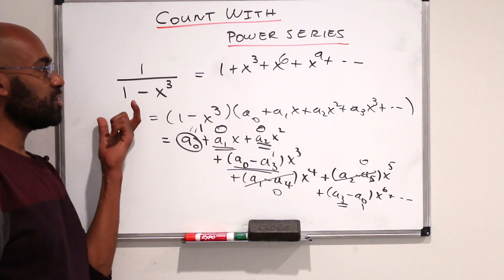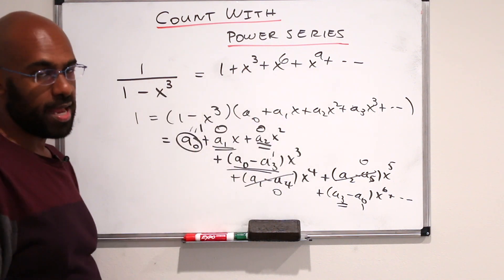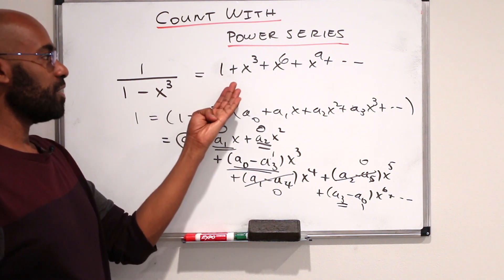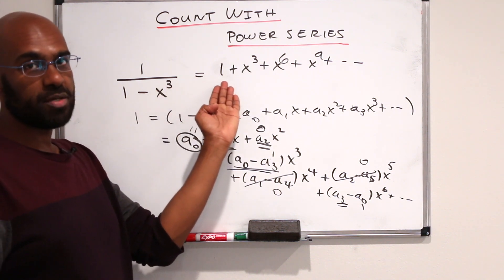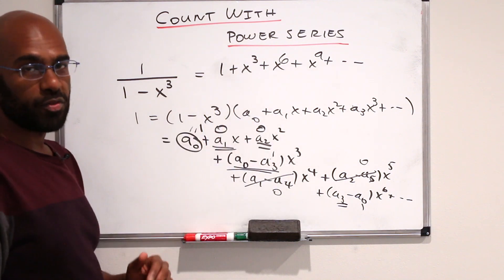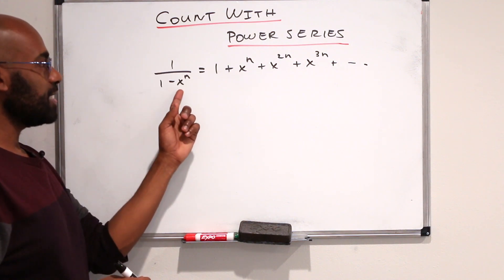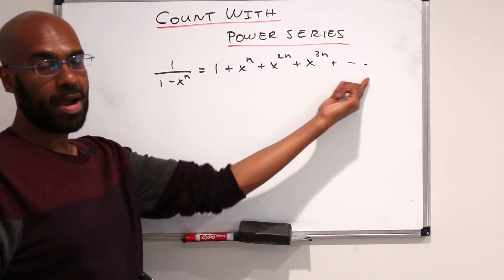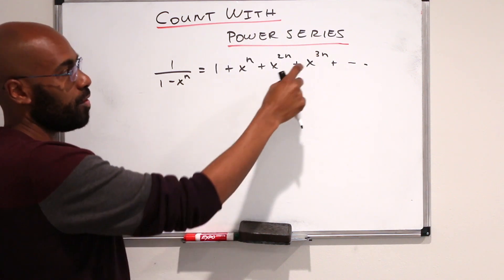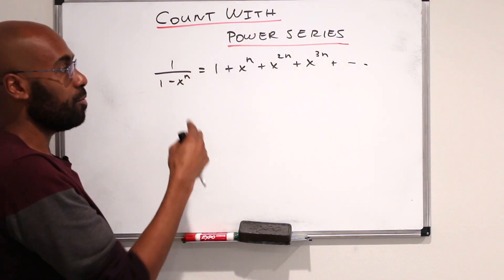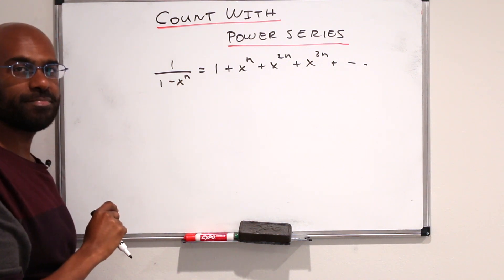In other words, the expansion of this will look something like this, where we take every third power and add them up. Another way to see this is this is the formula for the sum of a geometric series with a common ratio of x cubed. So in general, 1 over 1 minus x to the n has the power series expansion 1 plus x to the n plus x to the 2n plus x to the 3n, where all the exponents are multiples of n.